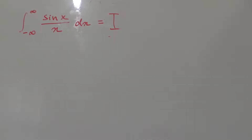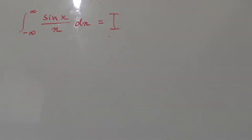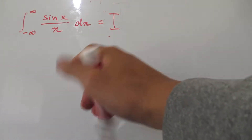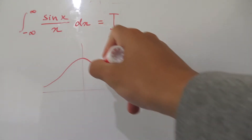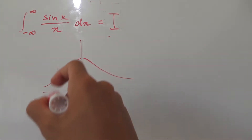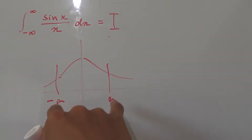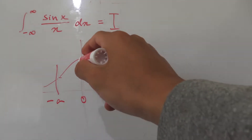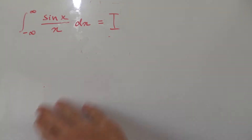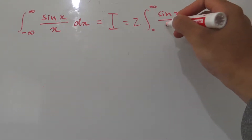I already called this integral i, just so we know what we're solving later on. Let's take a look at this integral first. We have sine of x and x — notice that they're both odd functions, and whenever you have an odd function divided by another odd function, the whole thing is just an even function. An even function is symmetrical across the y-axis, and if you integrate it across symmetrical bounds — say negative a to a — it's the same as finding the area from 0 to a and multiplying by 2. So we can rewrite our integral: i equals 2 times the integral from 0 to infinity of sine of x over x dx.